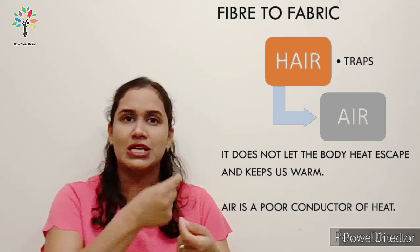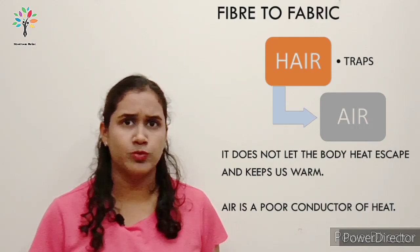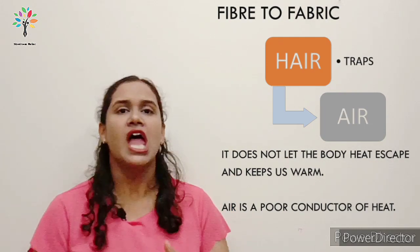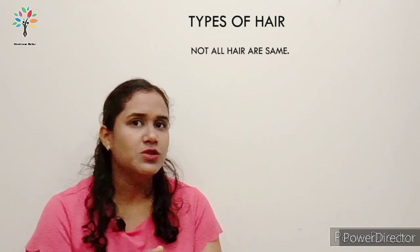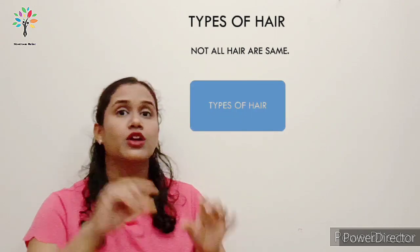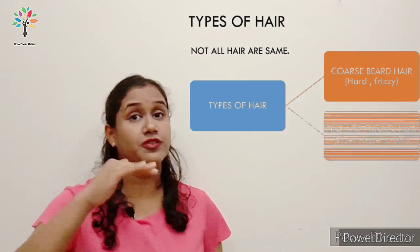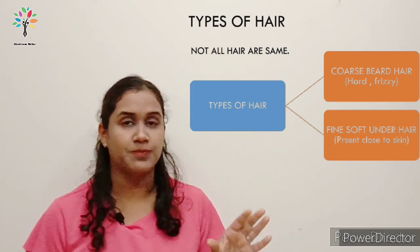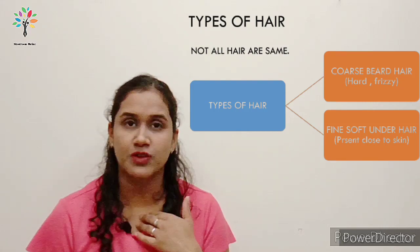How do we get wool, and how do we make a fiber? We get wool from various animals. Name four animals from which we can get wool and leave your answers in the comment section. Now, like our hair, animals also have different types of hair. One is coarse beard hair — hard and frizzy. The other is soft, fine under hair present near the skin. The soft under hair is what is useful for making fiber.